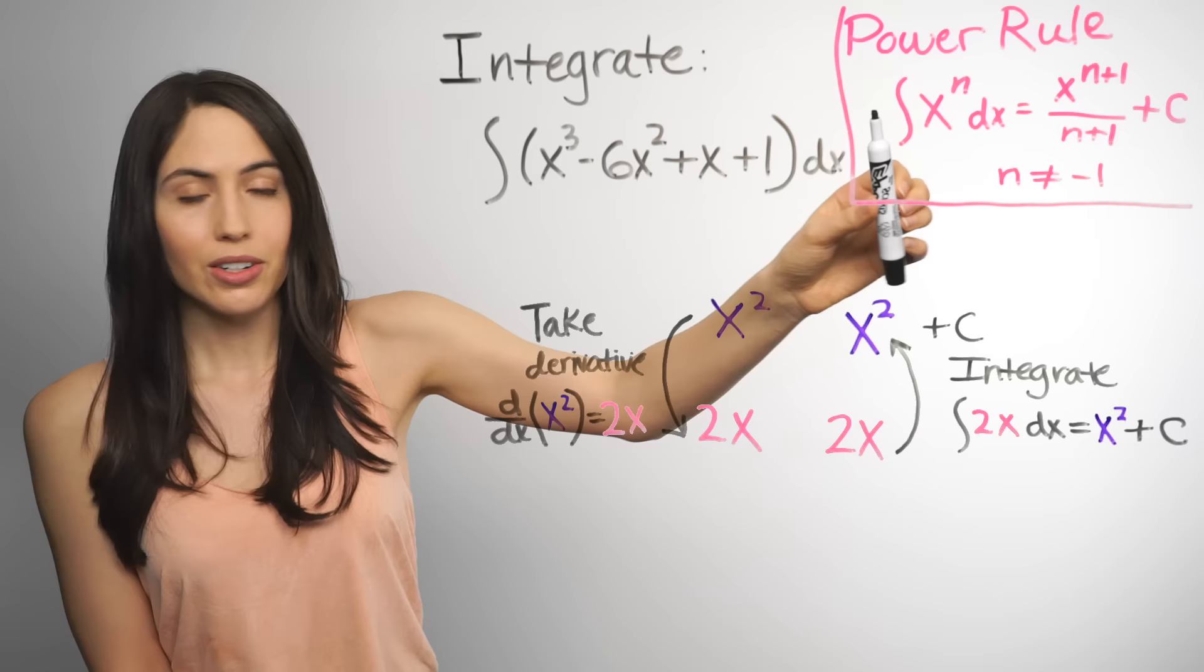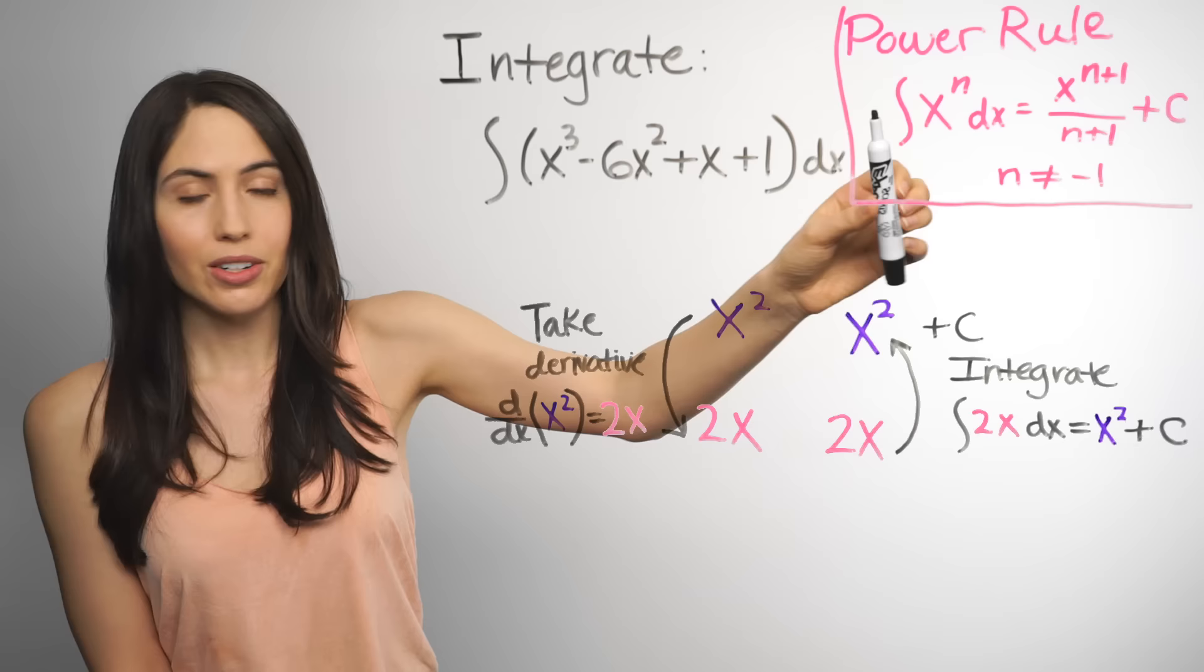So for x to the third power, the integral is, instead of x to the third, it's x to the fourth over 4.